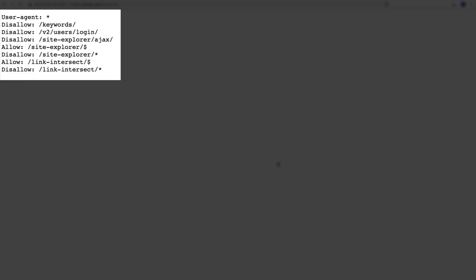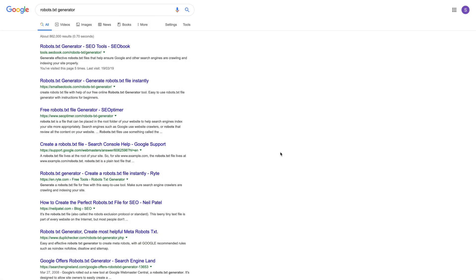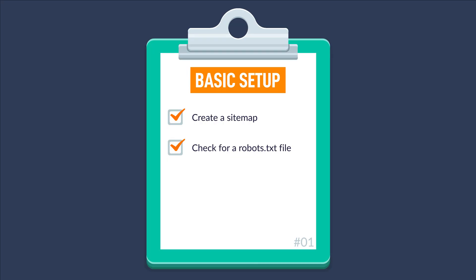If you see anything else, then Google 'robots.txt generator' and create one. The last couple of things you should do is set up Google Analytics and Google Search Console.